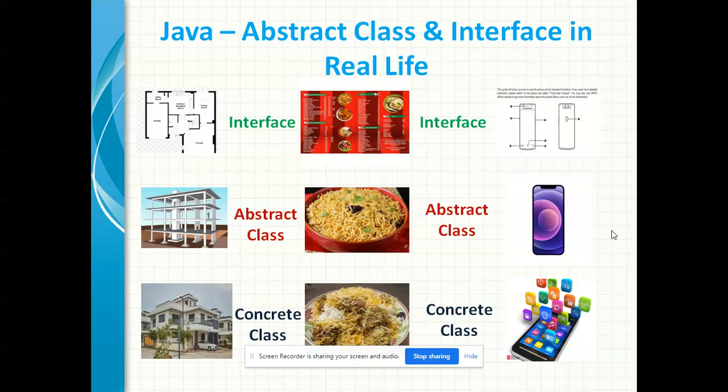In the same way, let us take the next scenario. Assume that you are going to a restaurant with your friends. Once you get into the restaurant, you will first look for the menu card. That menu card is not an implementation or real food, but with the help of the menu card you can understand what type of restaurant it is, what types of foods are available, and what the price of each food is. So finally, the menu card is the interface — it gives an outline about that particular restaurant.